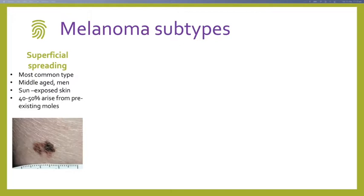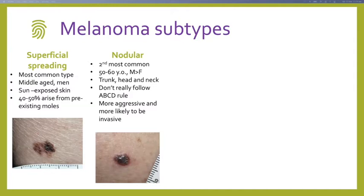SSMs or superficial spreading melanomas are the most common type, about 66% of all melanomas. Typically middle-aged men on sun-exposed areas, and 40–50% can arise in pre-existing moles. The ABCD tool most applies to this subtype. Nodular melanoma is the second most common — they differ because they present as a single-coloured, typically blue or black, uniformly dome-shaped nodule that can become polypoid, ulcerated, or bleed. They are the most aggressive subtype — any rapidly growing nodule means you must have a low threshold to excise immediately.